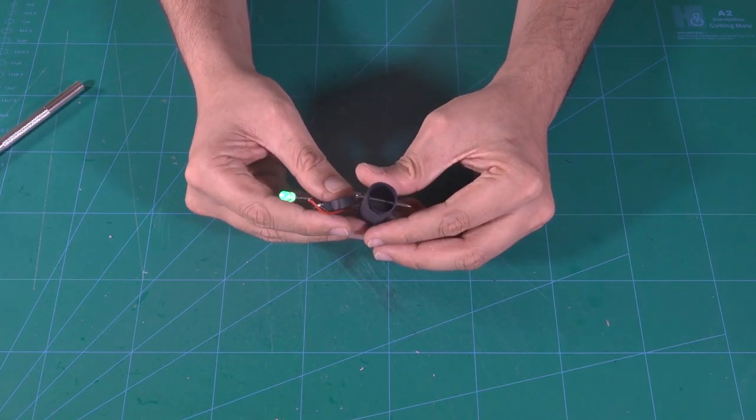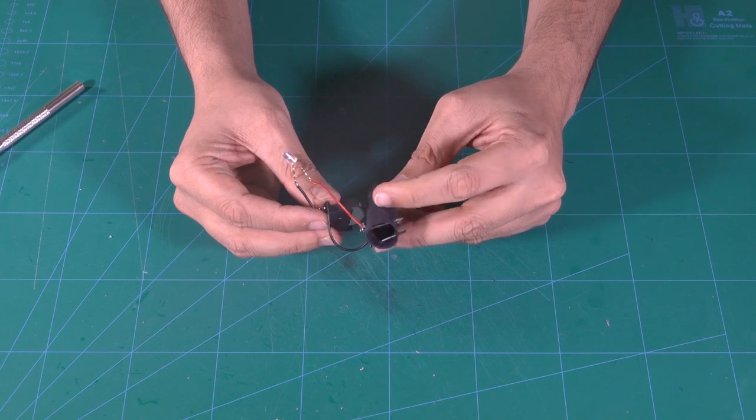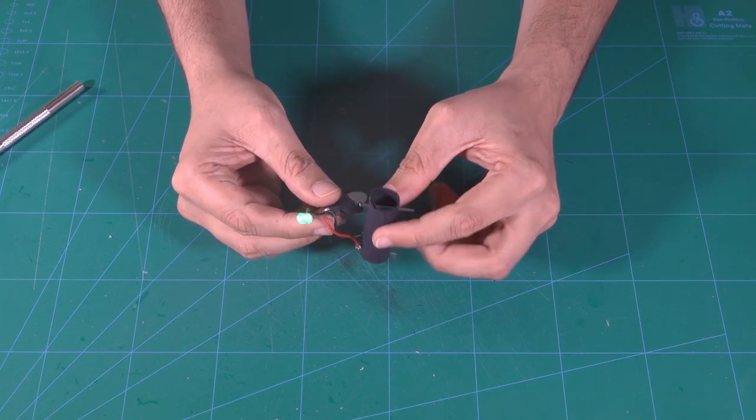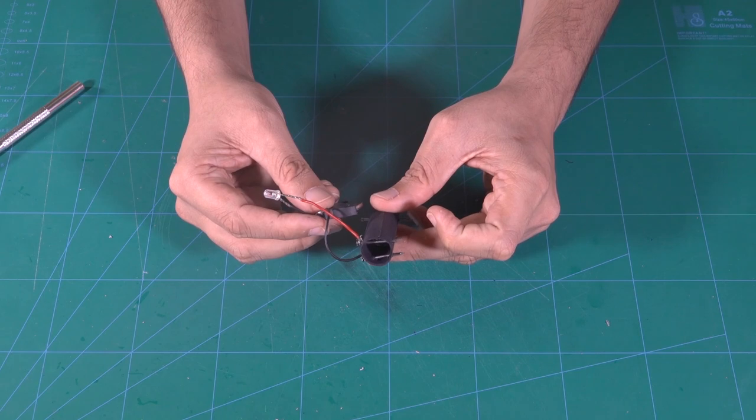When the metal ball touches the two pins, it completes the circuit and lights the LED. Turn it upside down and the circuit becomes incomplete and switches off the light.